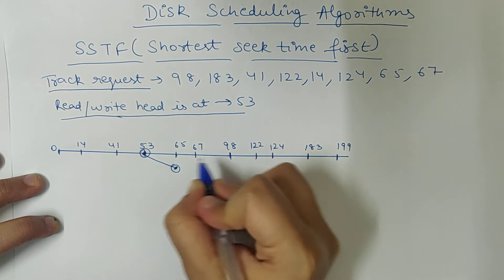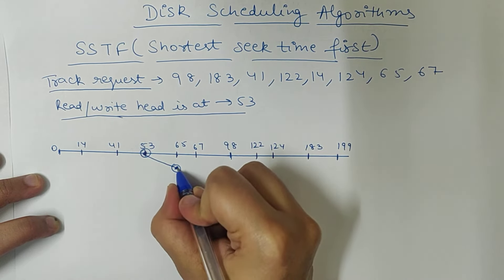So, first, go to 65. Then check the number that is nearest. Who is the next part?